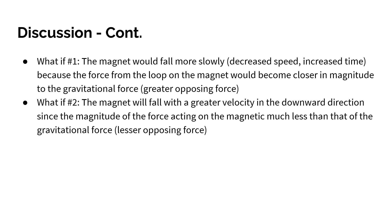What if question number one: The magnet would fall more slowly, decreased speed and increased time, because the force from the loop on the magnet would become closer in magnitude to the gravitational force. This means that a greater opposing force would be acting upon the magnet, which would decrease the speed and increase the time.